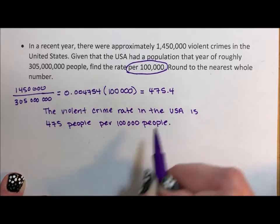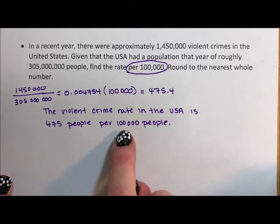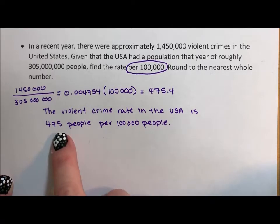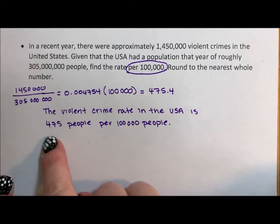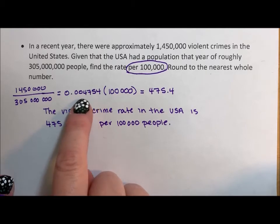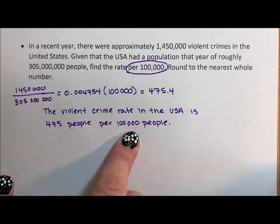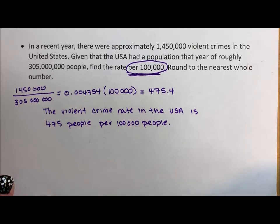This has a lot more meaning because I know how many people are in my community. If it's 475 per every 100,000 and there's just over 200,000 in my community, that's almost 1,000 violent crimes in my community. That has a huge impact on me. I know what that means as a person, to a community, because these are real, tangible numbers. 0.004754 doesn't really have a lot of meaning to me. 475 per 100,000 — I understand that number.